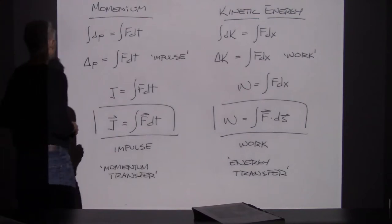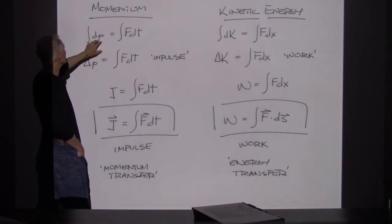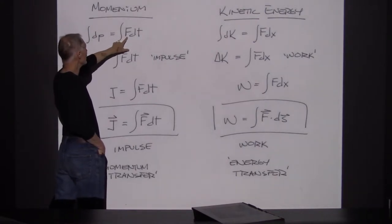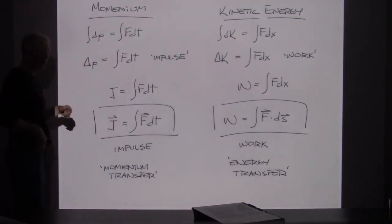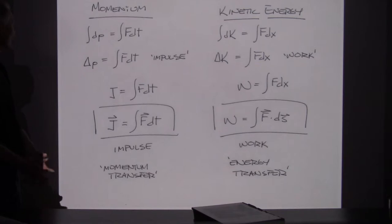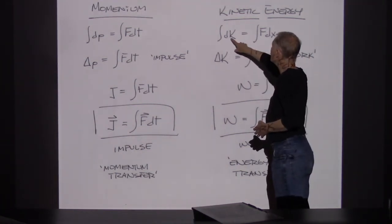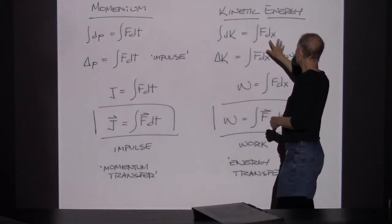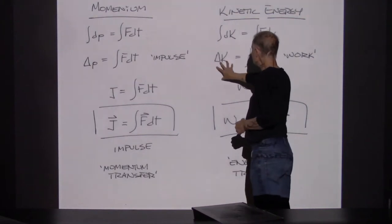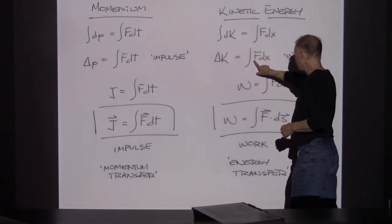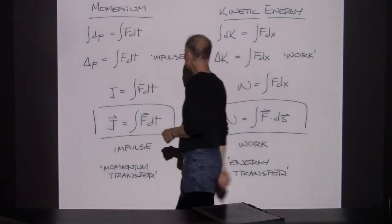If we add up all of the momentum that is transferred to an object, individual pieces of momentum depend on the force acting over a certain amount of time. This integral of force over time is called impulse. If we integrate the force over time — if we take the force multiplied by time — it tells us how much momentum we've transferred. With kinetic energy, we had a very similar, analogous formula: every time we did a little bit of energy transfer or work, that would result in a small increase in kinetic energy.